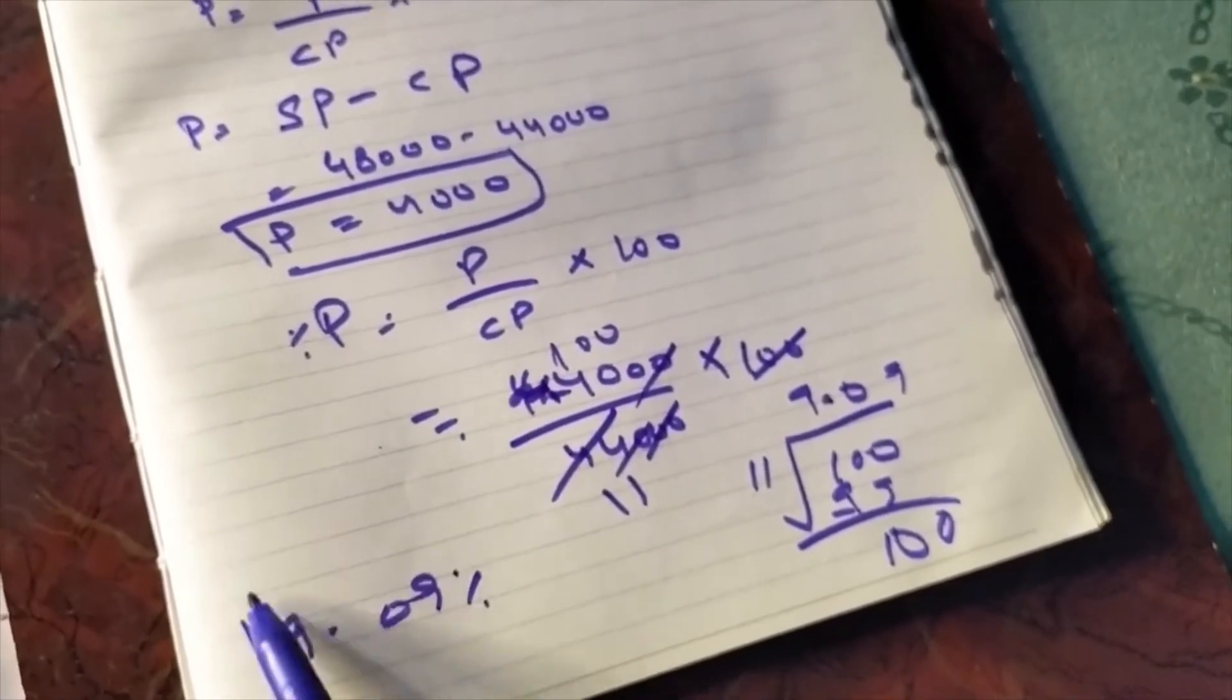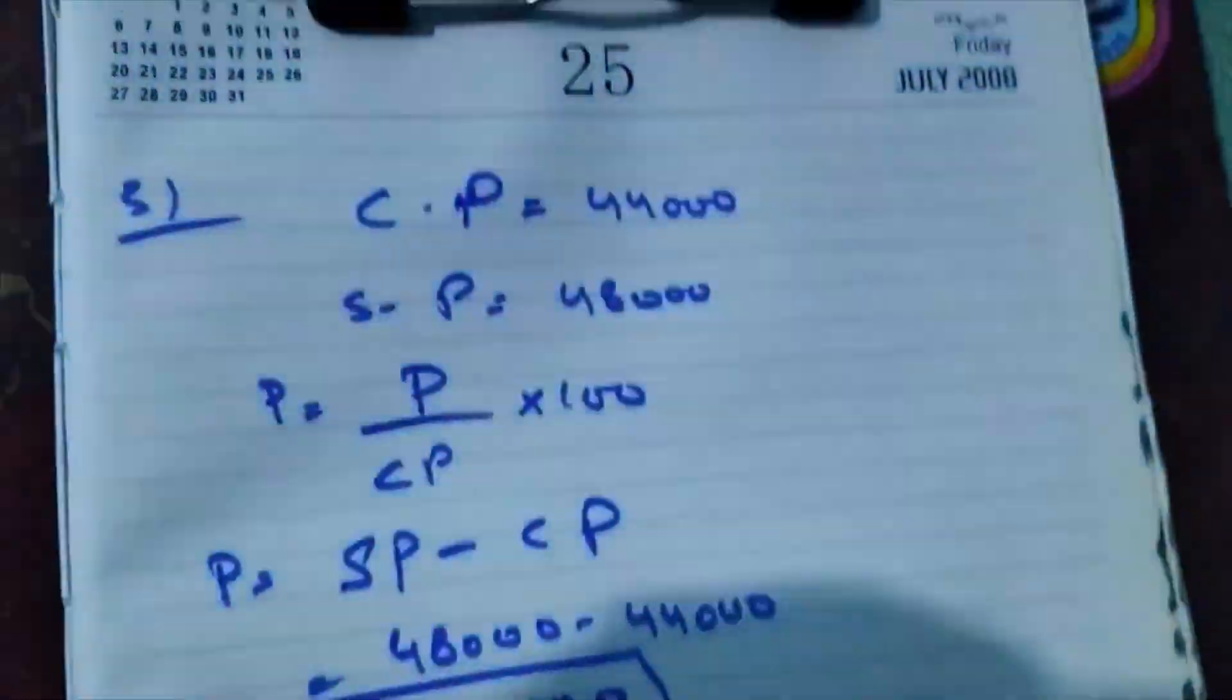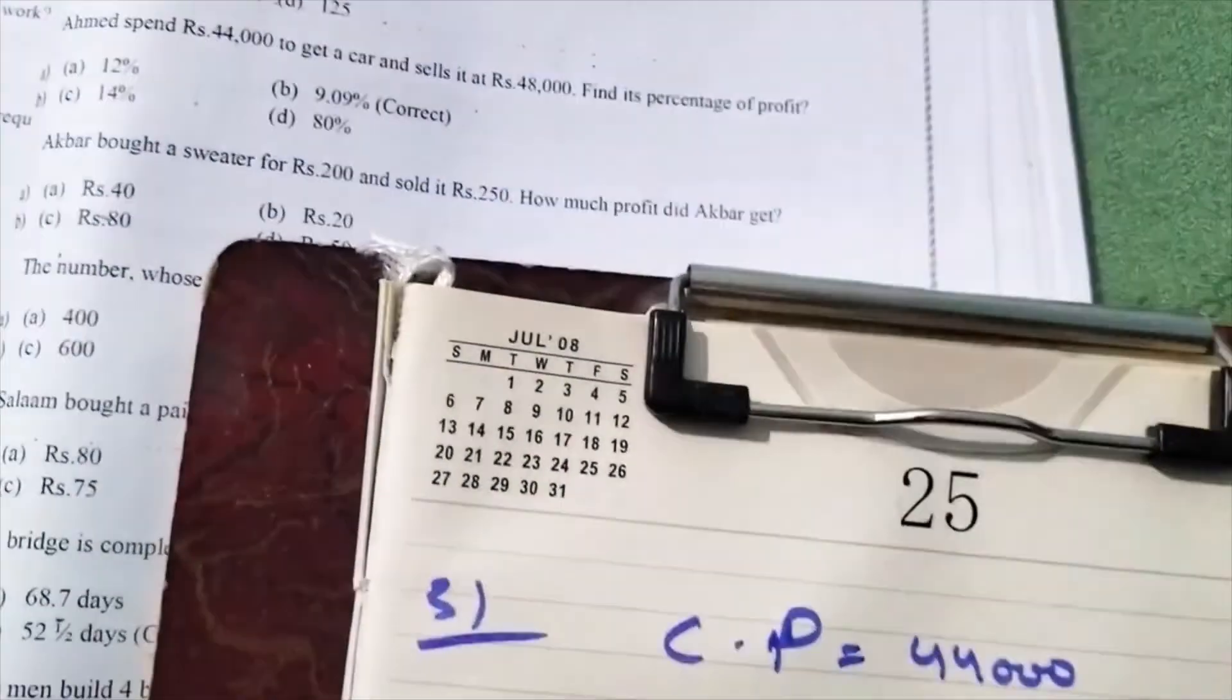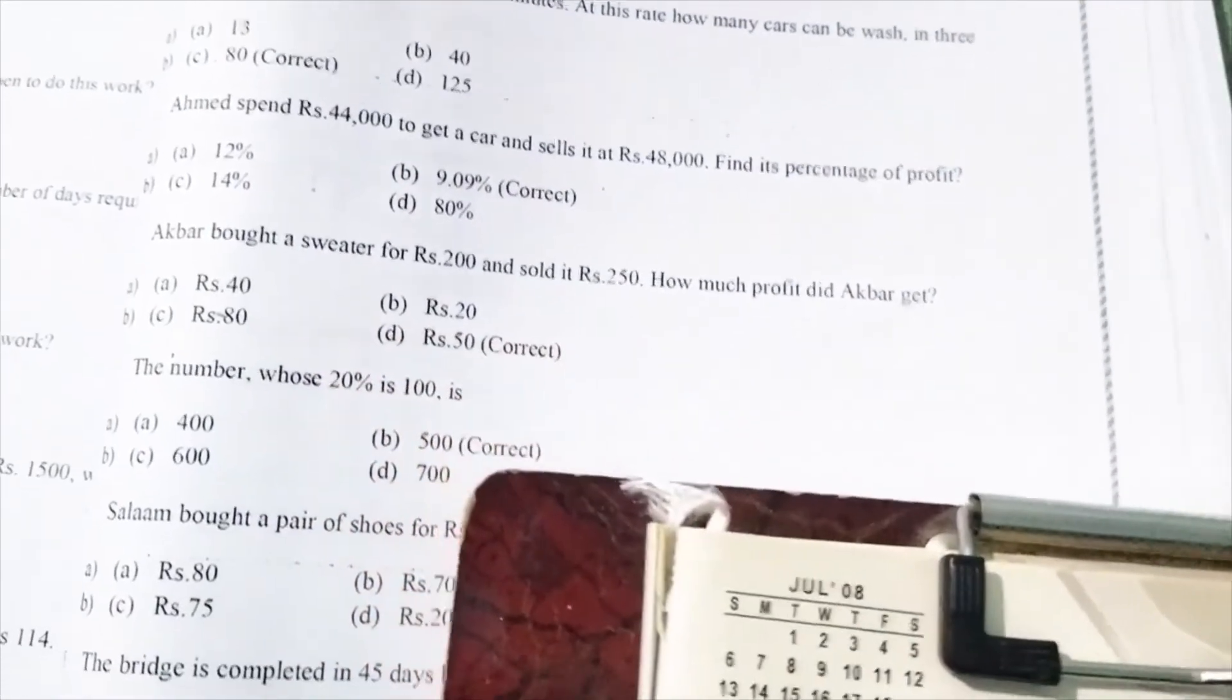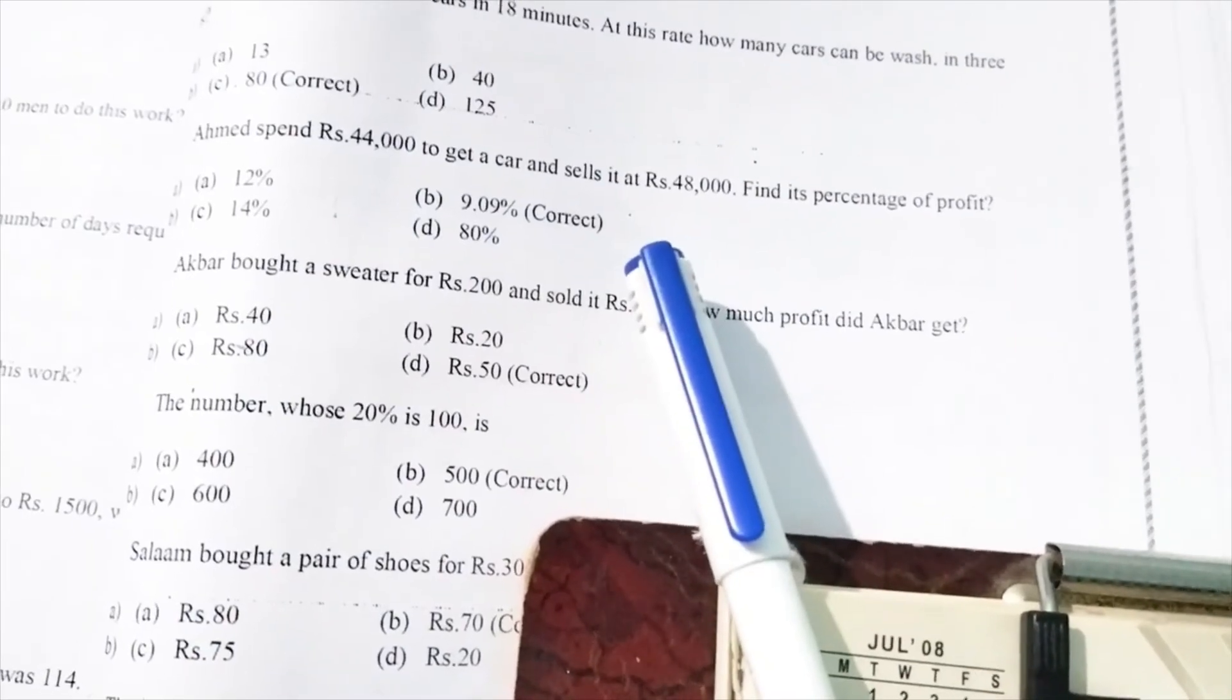According to this, looking at the options available in the question, the series will continue. Therefore, 9.09% is the correct answer.